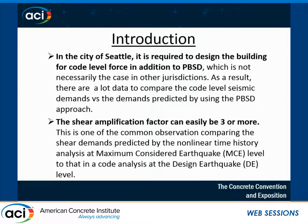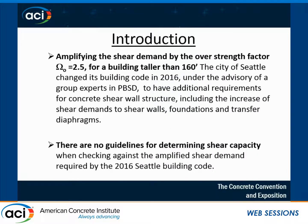Because Seattle requires code-level design, there is a lot of data collected. It has been noticed that performance-based design predicts much higher shear demand for concrete shear wall structures, particularly for tall buildings. It's not just the difference between MCE — maximum considered earthquake — versus the design-based level earthquake, which is two-thirds MCE, or about 50% more. The results often show a factor of three or more. That's why Seattle, in 2016, started to require for any building taller than 160 feet an additional shear strength amplification factor of 2.5, equivalent to an omega over-strength factor.